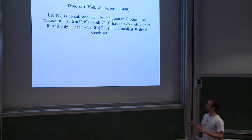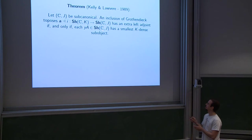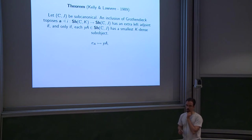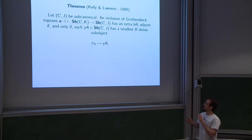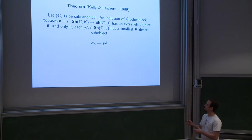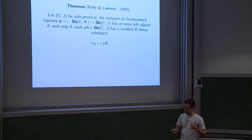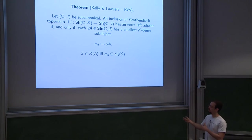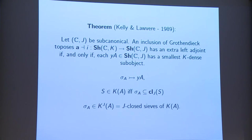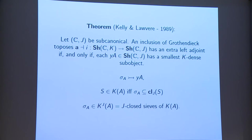You take a subcanonical site — you don't need to take a subcanonical site, but I've taken it subcanonical to make things easier. Then the inclusion of Grothendieck toposes has an extra left adjoint if and only if each representable has a smallest k-dense sub-object, which I baptize sigma. This smallest k-dense sub-object is not necessarily a covering sieve; it doesn't live in k because covering sieves live in the pre-sheaf category. A sieve belongs to k if and only if its closure contains sigma_a. There's a slight subtlety there — there are ways around it which I discuss in my thesis.